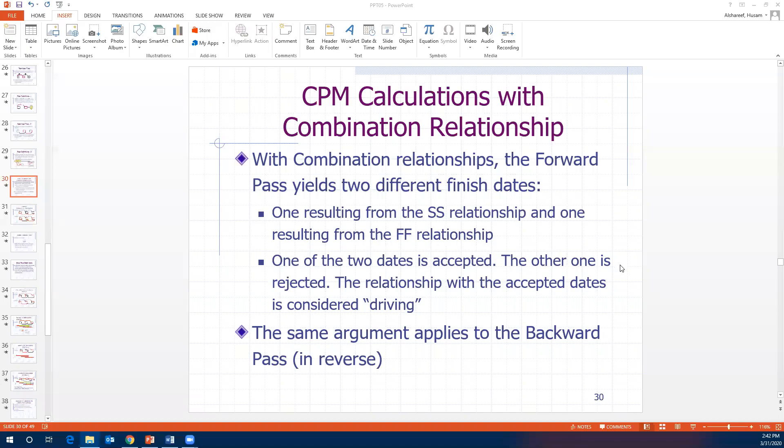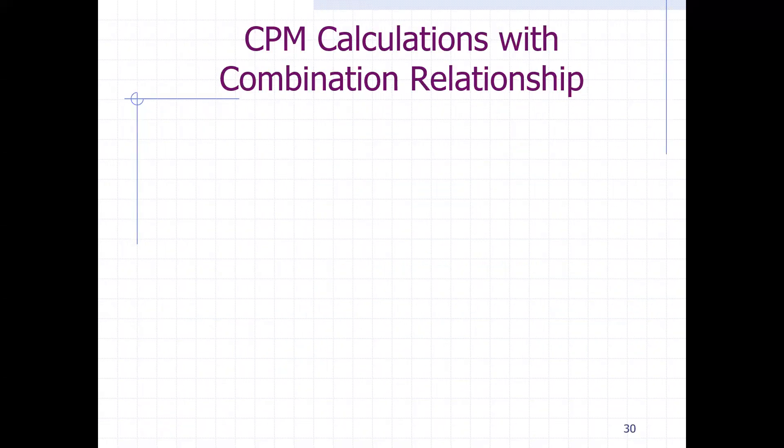Hello, everyone. This is part eight of the combination relationship, the start-to-start and finish-to-finish relationships, and also the comparison between the interruptible versus the contiguous activities and the remedies.